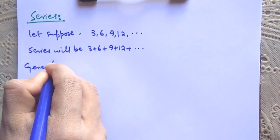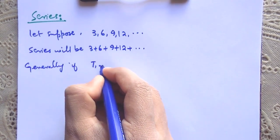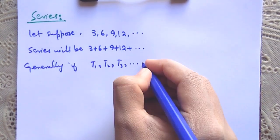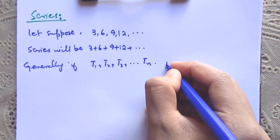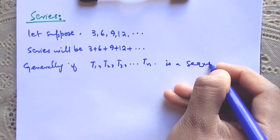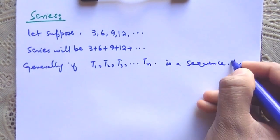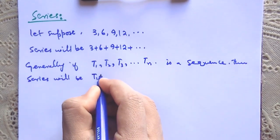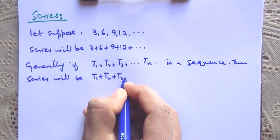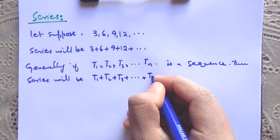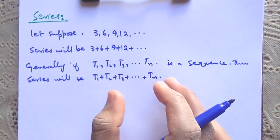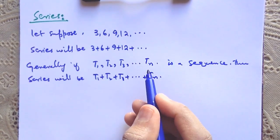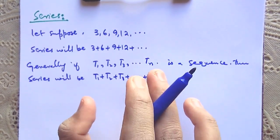Generally, if t1, t2, t3, up to tn is a sequence, then the corresponding series will be t1 plus t2 plus t3, up to tn. If the terms of the series are finite, then it is called a finite series. Otherwise, if the terms of the series are infinite, then it is called an infinite series.